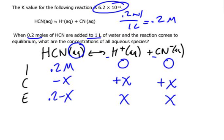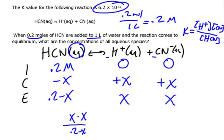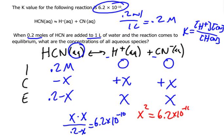If I set this up as an equation, the formula for Ka is [H+] times [CN-] over [HCN]. So I'm essentially saying X times X over (0.2 minus X) equals the value of K, which is 6.2 times 10 to the negative 10. X times X is X squared, so X squared equals 6.2 times 10 to the negative 10 times (0.2 minus X). This quickly becomes a quadratic equation because of the X squared term.